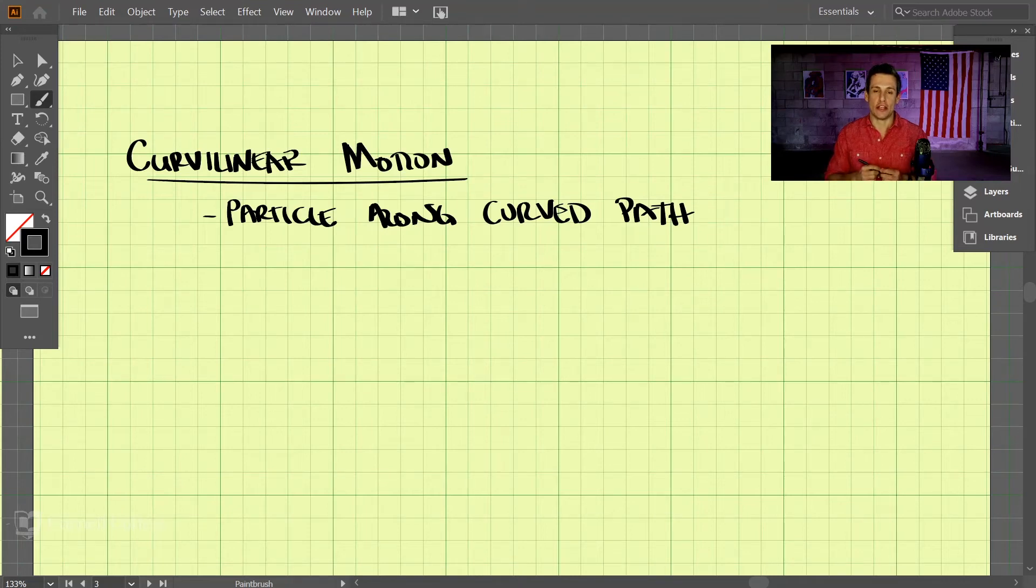Now that we've covered the basic equations for acceleration and velocity, let's move on to a vector notation form of these equations. We'll first talk about curvilinear motion, which just means a particle is moving along a curved path.